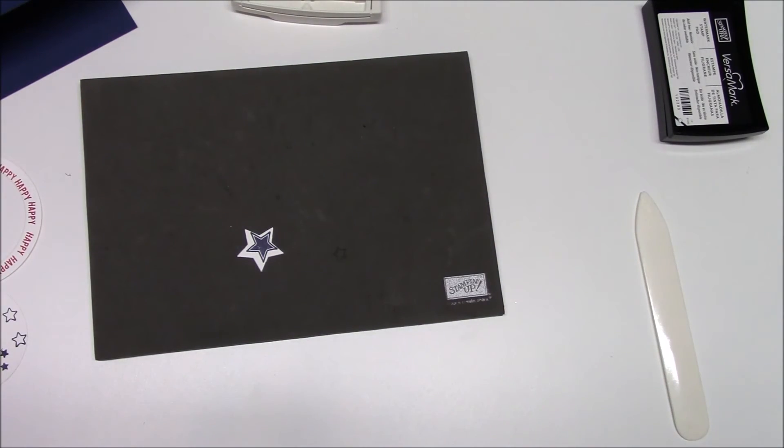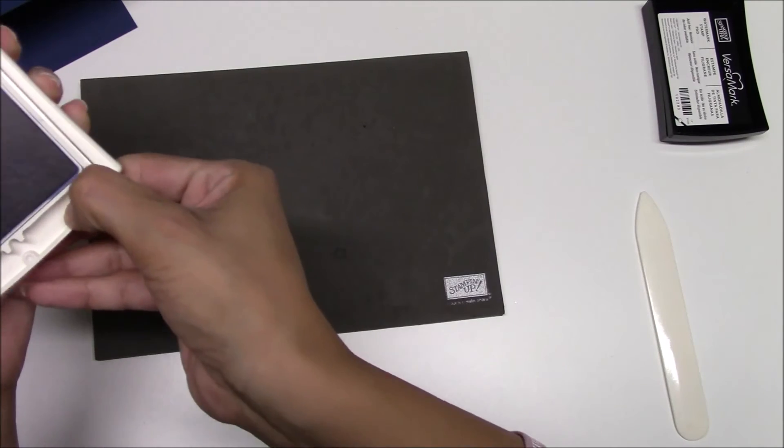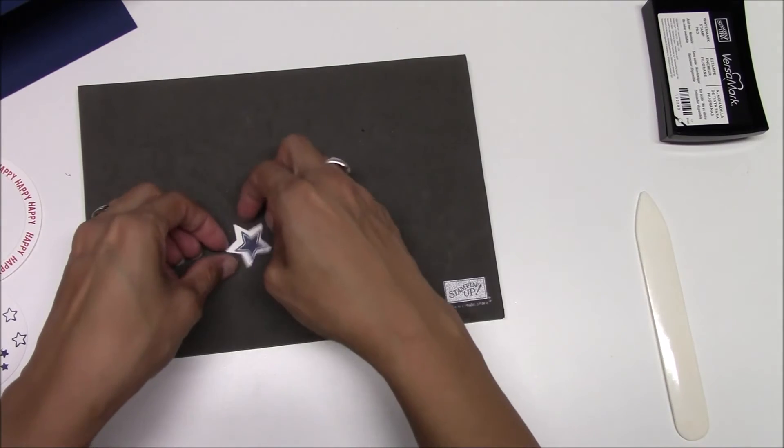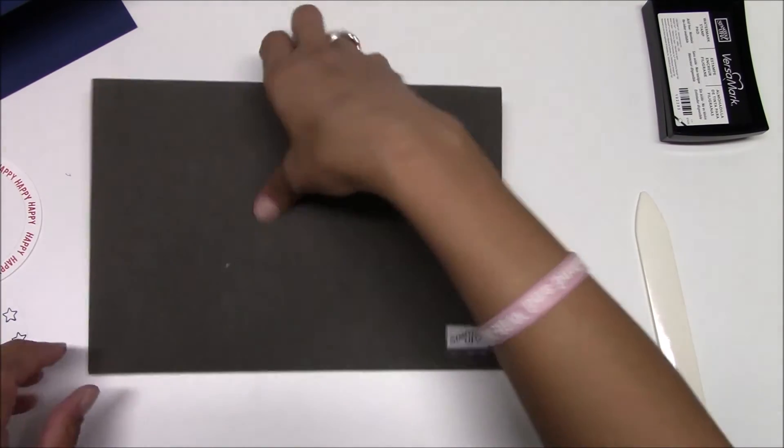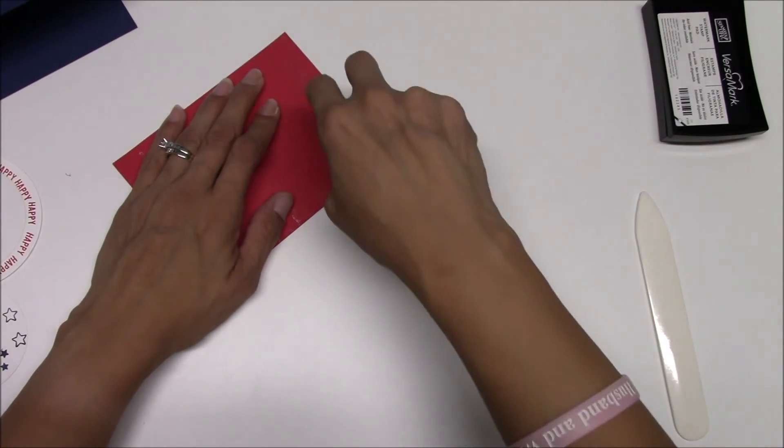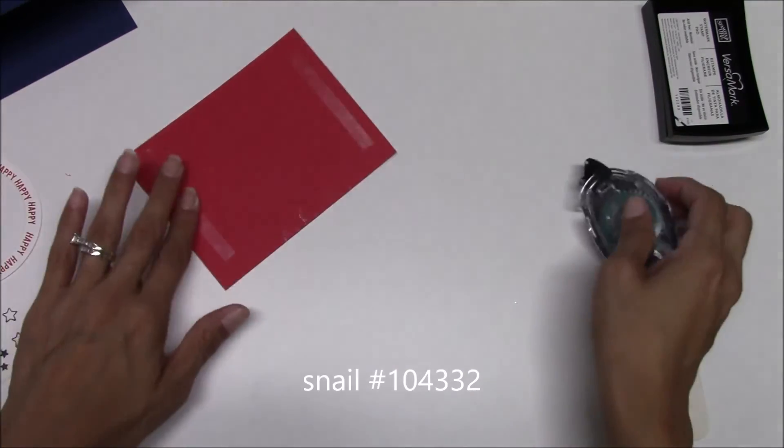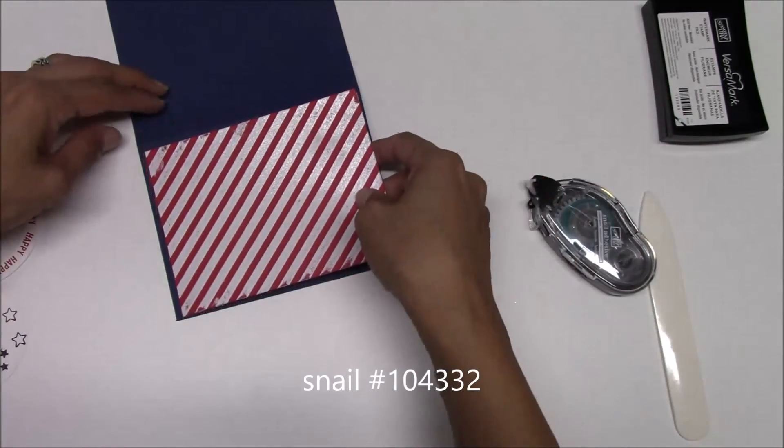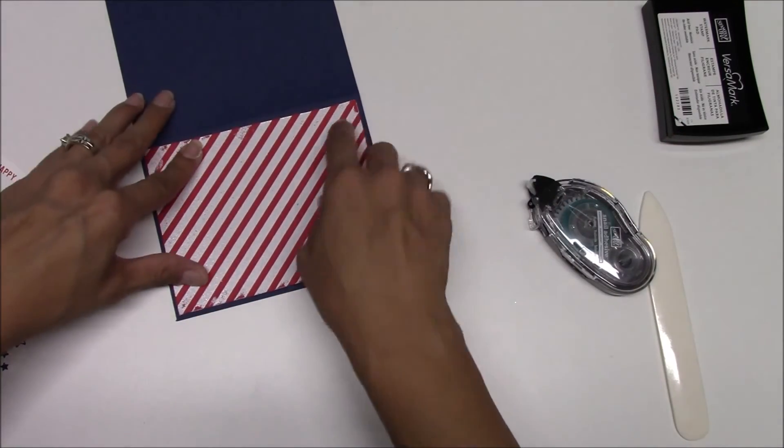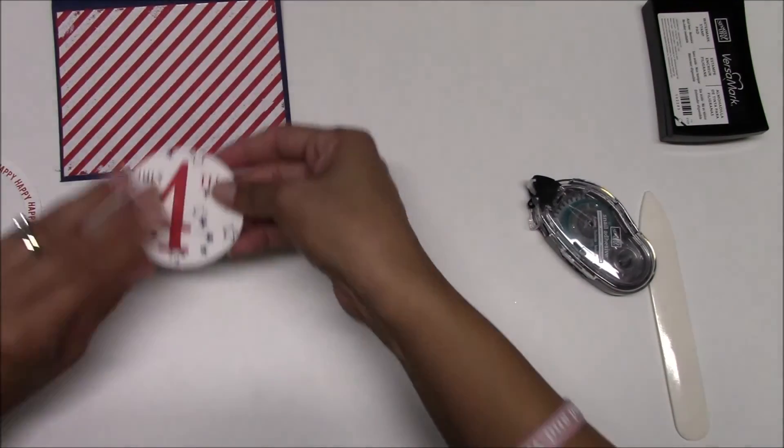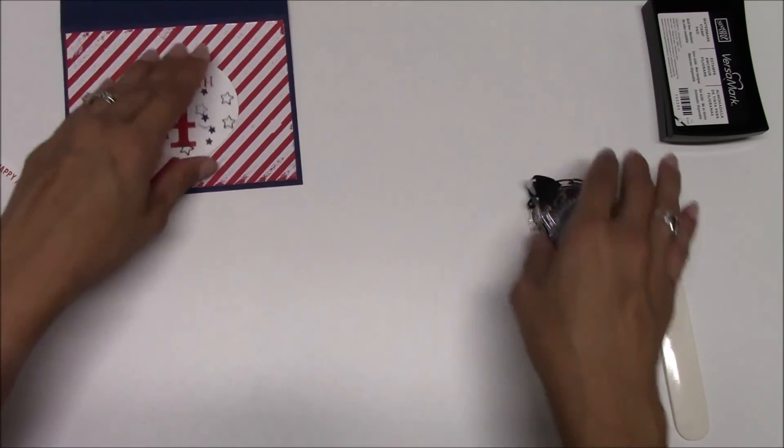Now let's put our card together. We're going to get our stripes that we've embossed. Okay, and then we're going to put this in the center.